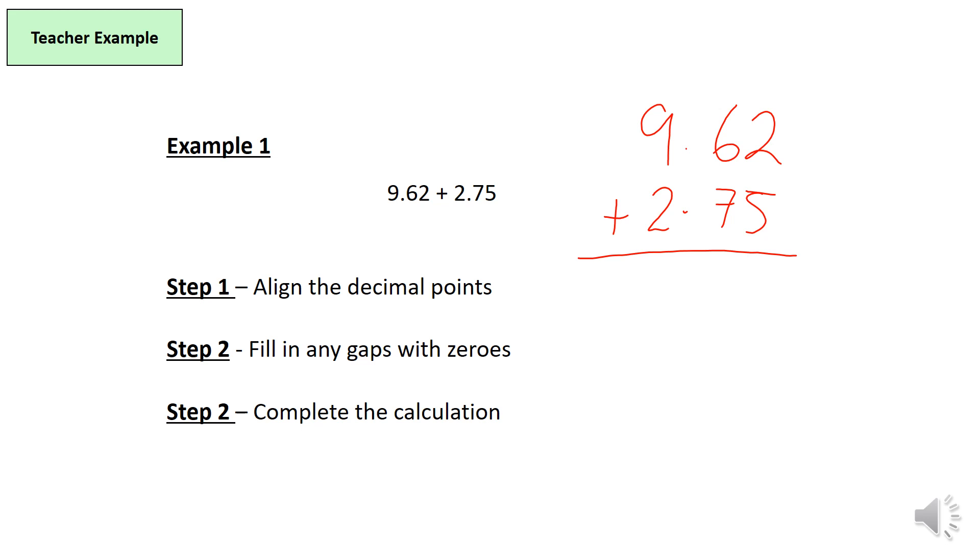Now all we need to do is complete the calculation. We are going to add up the columns. 2 plus 5 gives me 7. 6 plus 7 gives me 13.